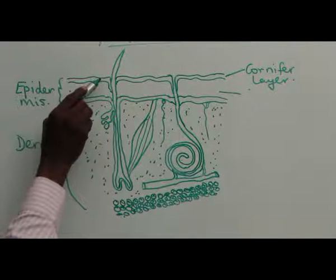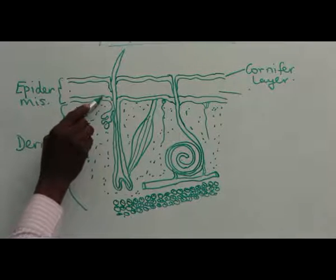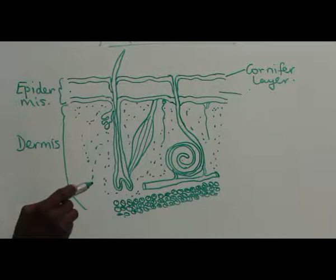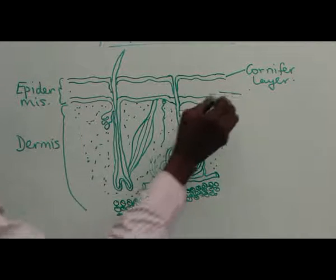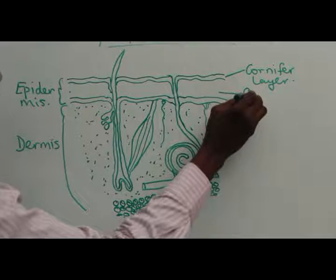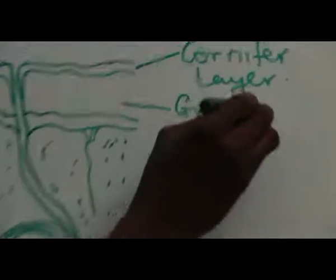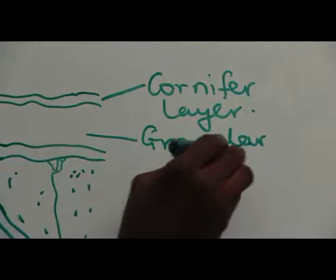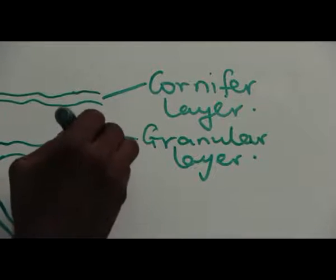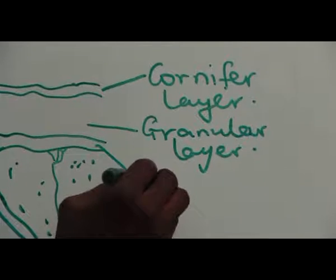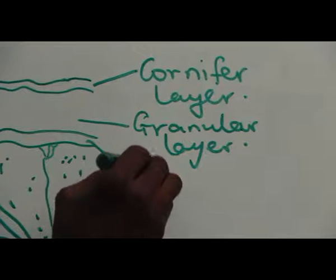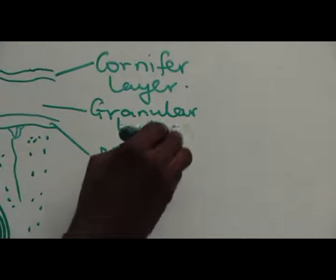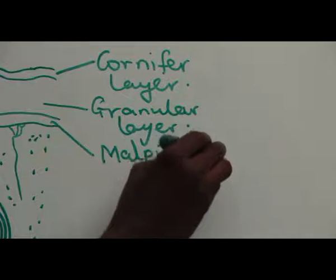The epidermis is made up of three layers: one, two, three. The first one is the cornified layer. And the second one is the granular layer. And the third one is the malpighian layer.